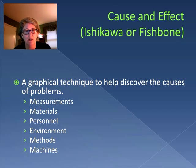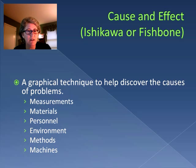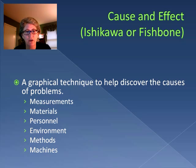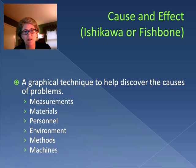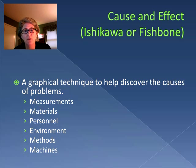What a cause and effect diagram does is provide a graphical technique to help discover causes of problems. Typically, there are a number of spines on the graph, including things like measurements, materials, personnel, environment, methods, and machines. Sometimes there are four spines, sometimes six, and the spines can vary depending on the area you're working in, but they provide a way to get you thinking about causes of a particular situation.